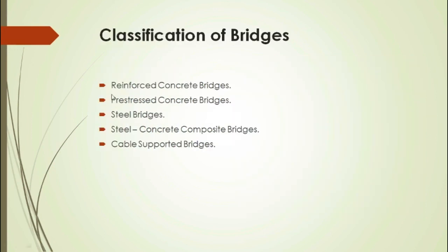Moving on to the classification of bridges. Bridges are classified mainly into five categories: first, reinforced concrete bridges; second, pre-stressed concrete bridges; third, steel bridges; fourth, steel-concrete composite bridges; and fifth, cable-supported bridges.